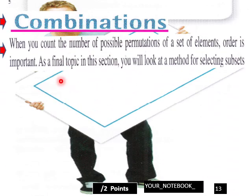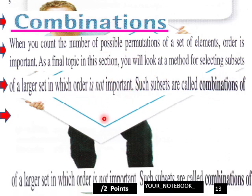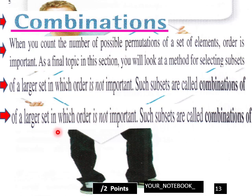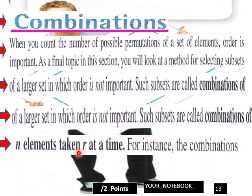Remember combinations. When you count the number of possible permutations of a set of elements, order is important. As a final topic in this section, you will look at a method for selecting subsets of a larger set in which order is not important. Such subsets are called combinations. Combinations are a subset of a larger set in which order is not important — combinations of n elements taken r at a time.